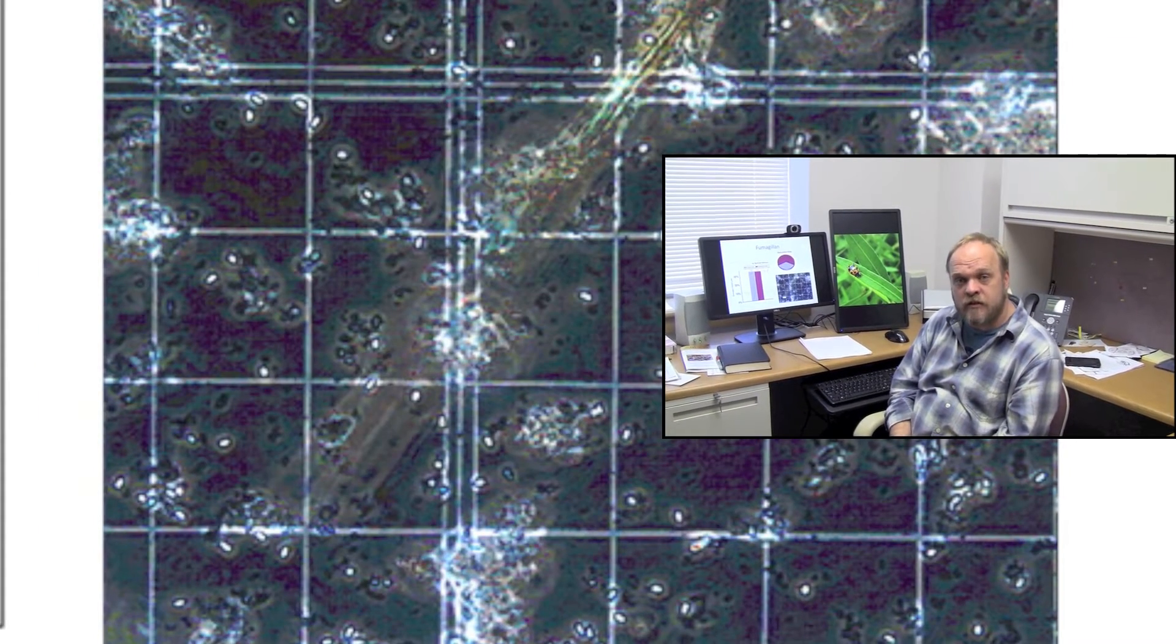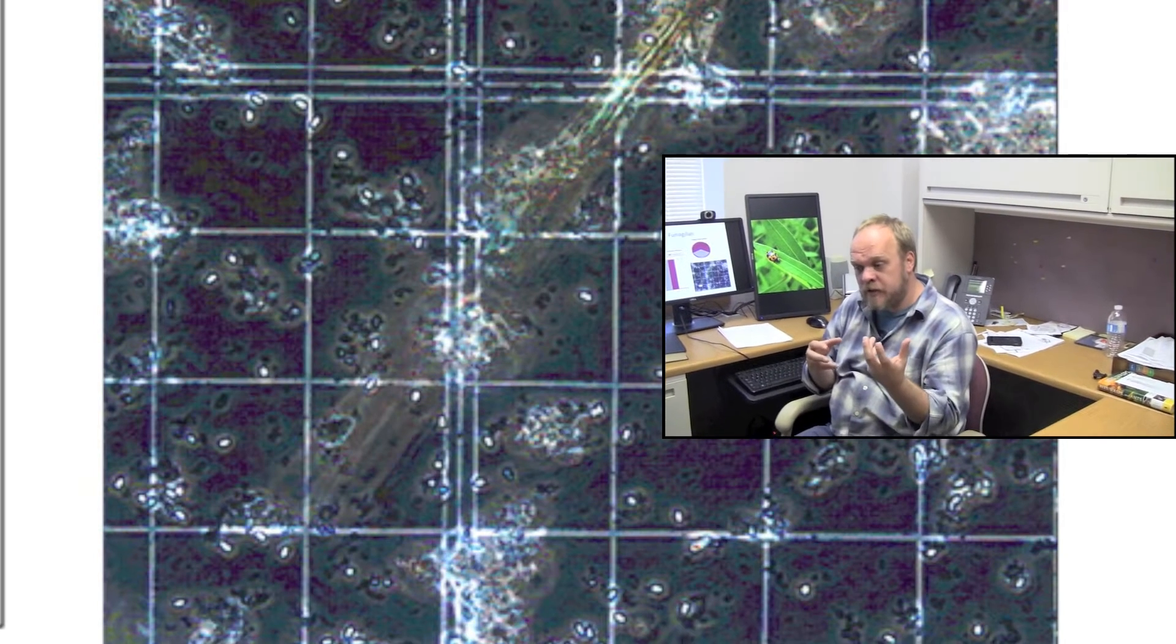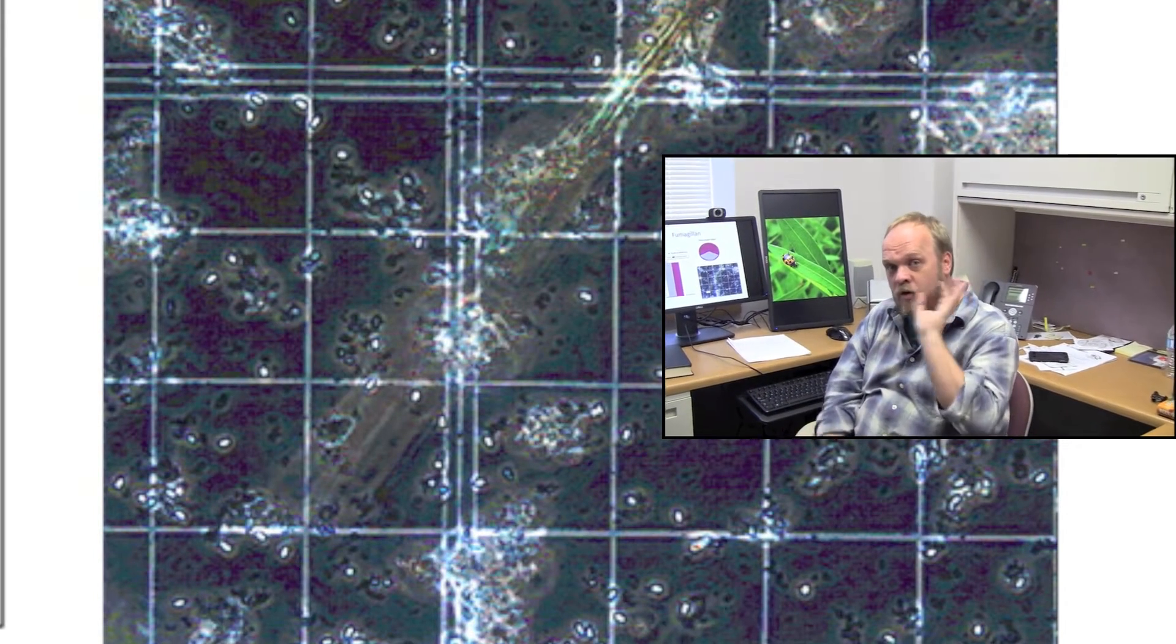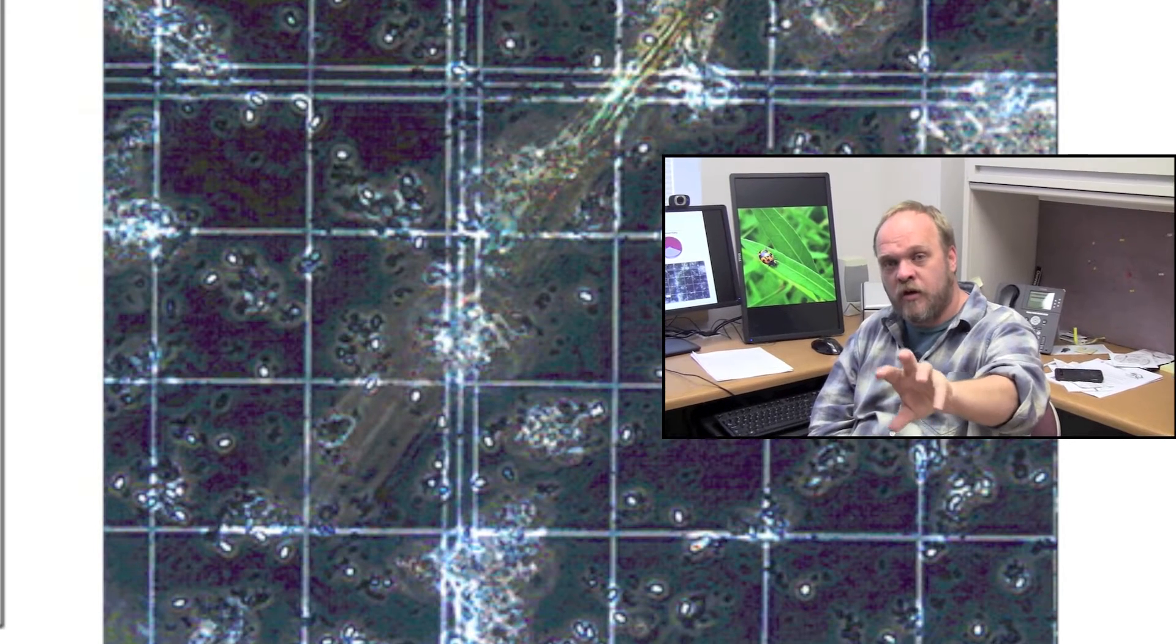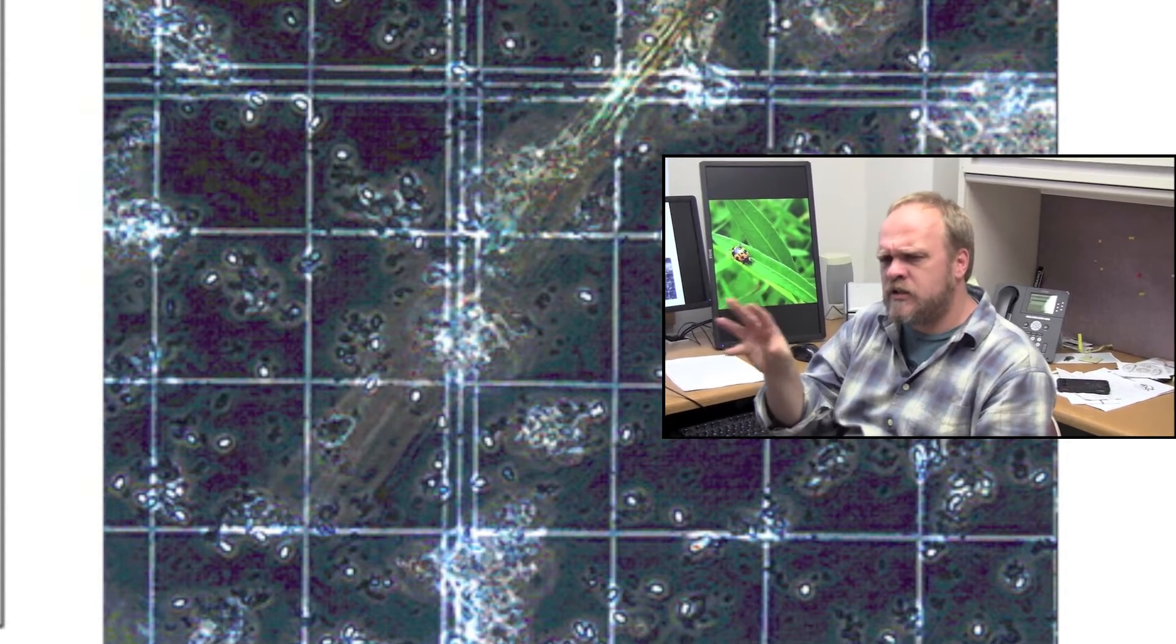Fumagillin is an antibiotic used for the control of nosema. Certainly nosema is getting a lot of attention. There are two types of nosema we're aware of now: nosema apis and nosema ceranae. We know a lot about nosema apis. It's that traditional winter nosema that causes dysentery in the hive, whereas nosema ceranae tends to be a dry summer nosema. We're not really sure what it does to the hive.